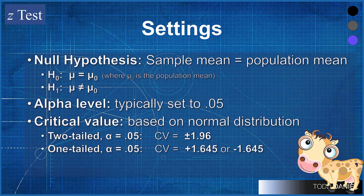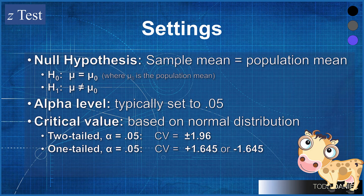That leaves us with our alternative hypothesis, that the sample mean does not equal the population mean, written as H₁: μ ≠ μ₀, where we substitute the same population mean value. Typically, we set our alpha level to 0.05, which for a normal distribution with a two-tailed test means our critical value will be positive and negative 1.96 for the upper and lower tail.